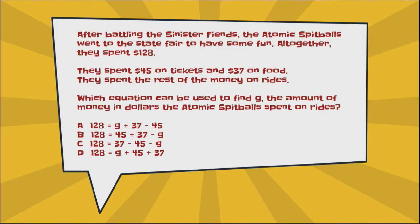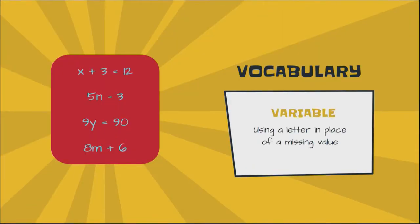For another problem, I'll go to the question at the bottom: it says 'which equation,' which makes sense because all the answer choices have equal signs and can be used to find g. In this case, g is the amount of money the Atomic Spitballs spent on rides. We're trying to figure out how much they spent on rides, and we'll use one of these equations to figure it out.